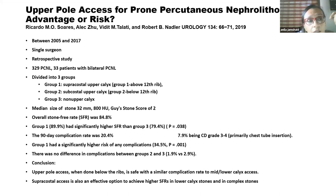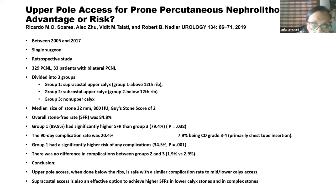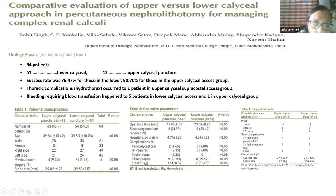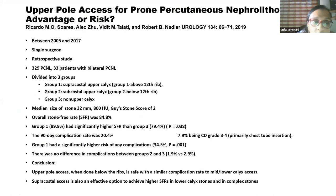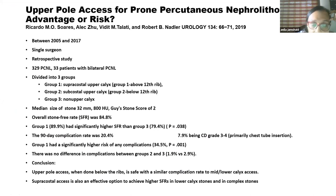The 2019 study was conducted between 2005 and 2017 — a single surgeon retrospective experience. They divided the cohort into three groups: Group 1 went through the supracostal upper calyx (above 12th rib), Group 2 subcostal upper calyx (below 12th rib), and Group 3 punctured from a non-upper pole calyx. Median stone size was 3.2 cm with Hounsfield units of 800. The overall success rate was 84.8%.